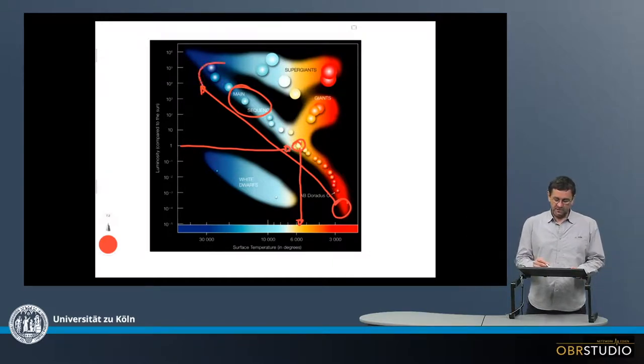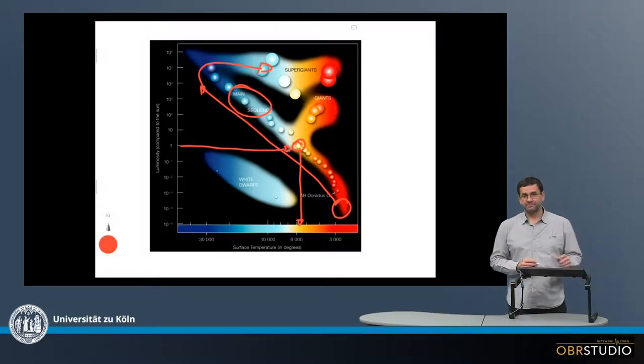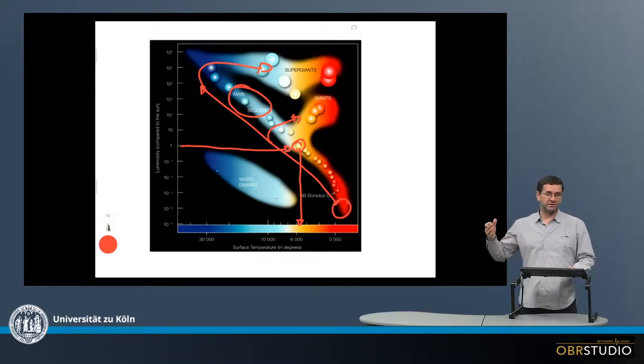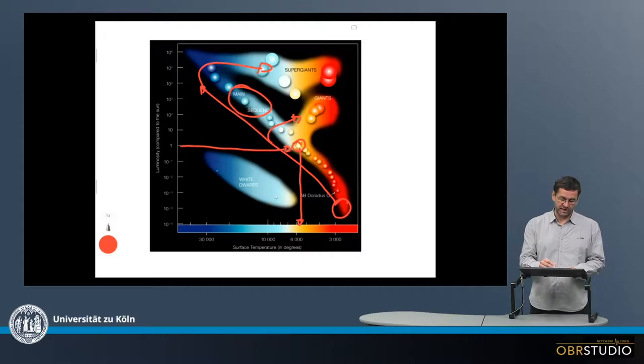At some point then, the stars will make a turn into this direction. Or maybe even earlier, something like here. And when they make this turn, it depends on the size or mass, initial mass. So higher mass go further up, lower mass are a little bit further down.